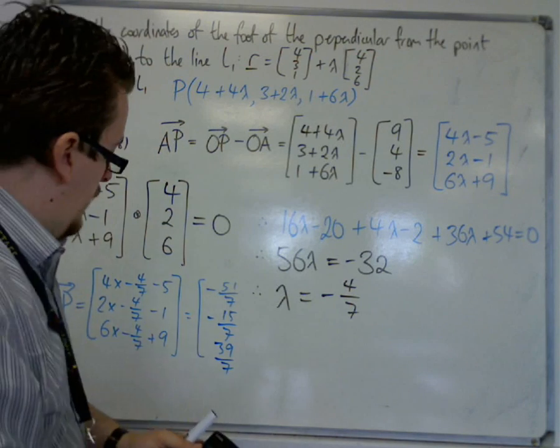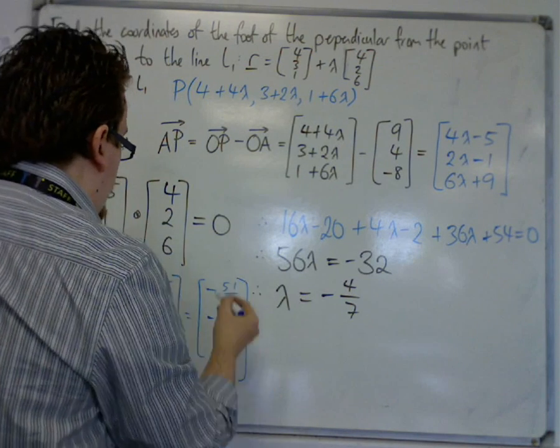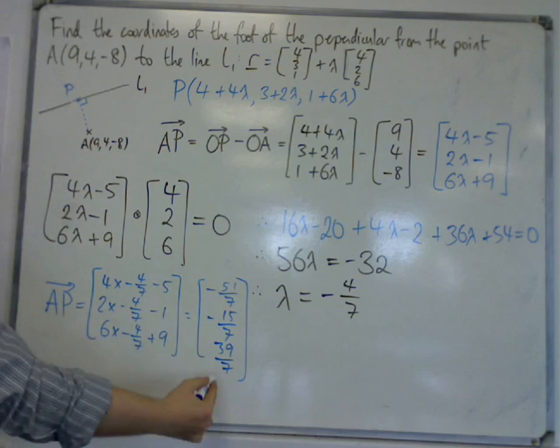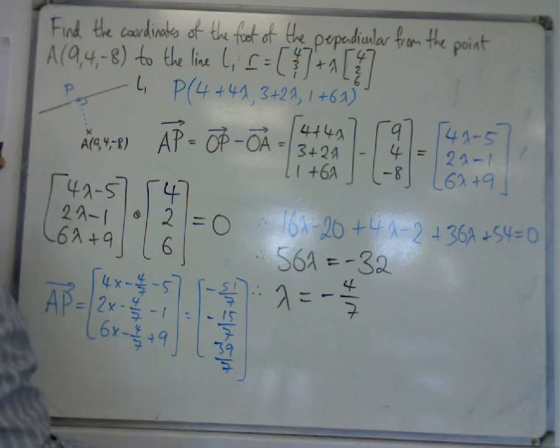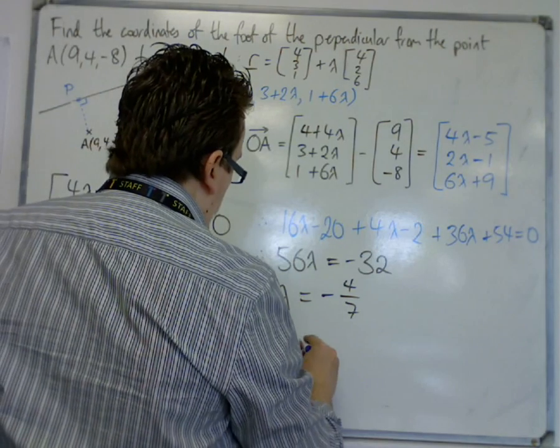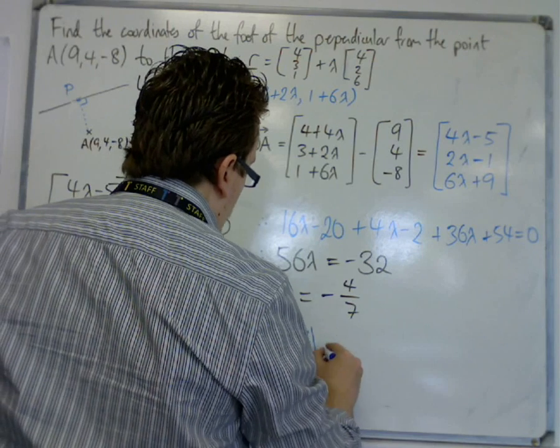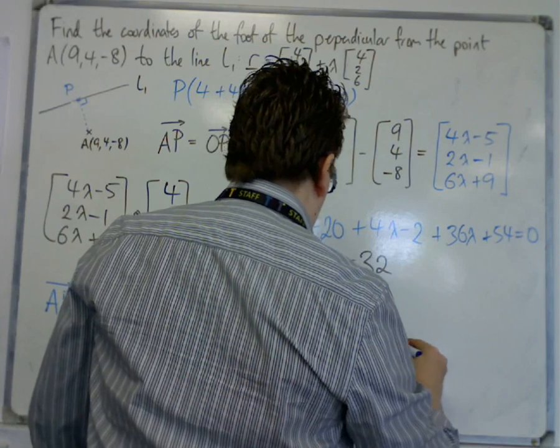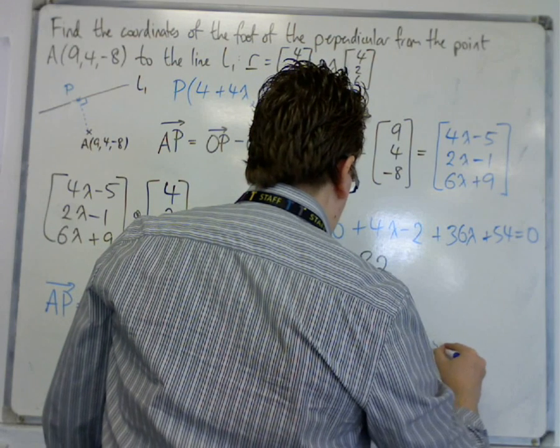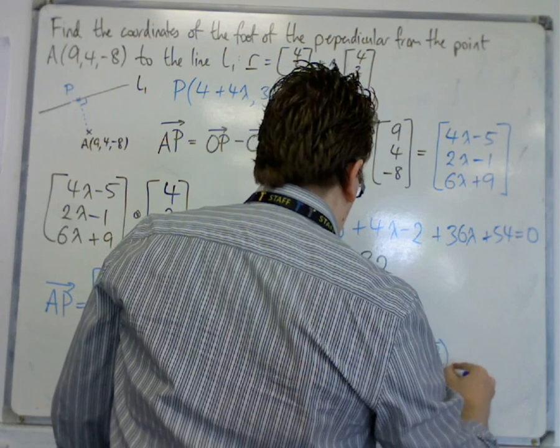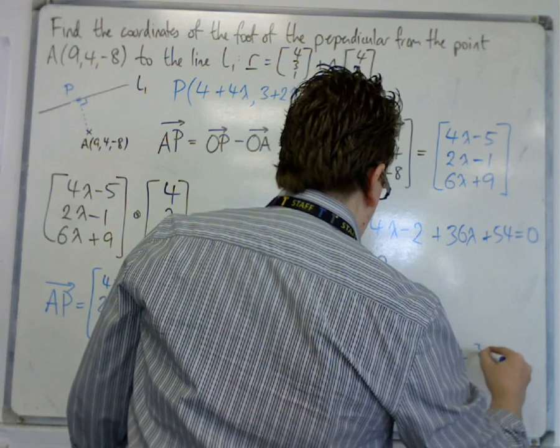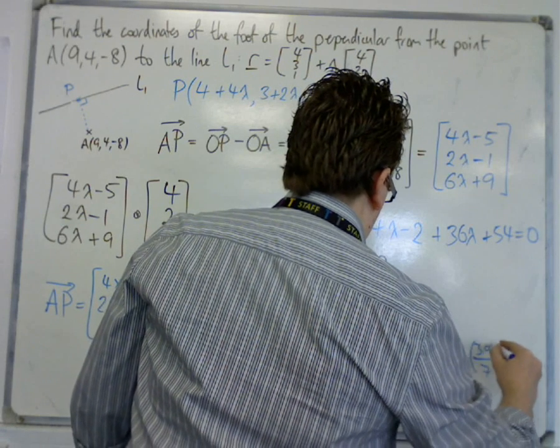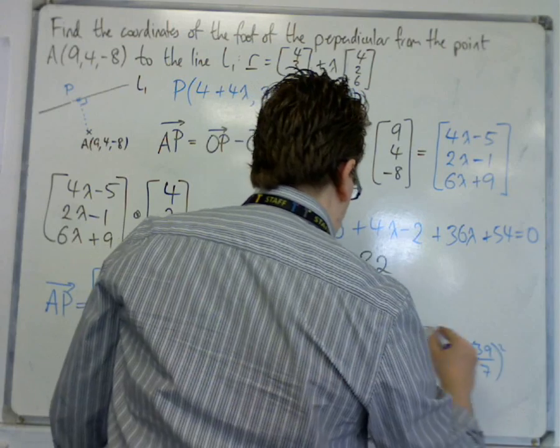Okay? So this is the vector from A to P, and then our job is to really find the length of that vector. So we've got minus 51 over 7 squared plus minus 15 over 7 squared plus 39 over 7 squared, square rooted.